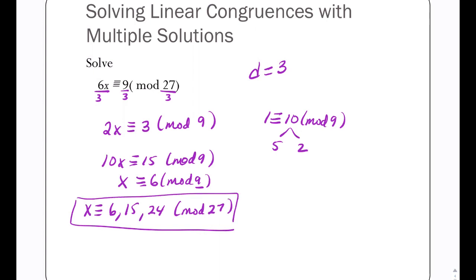If you added 9 on again to the 24, you would get 33, which is exactly the same thing as 6 mod 27. So there are 3 different solutions mod 27.